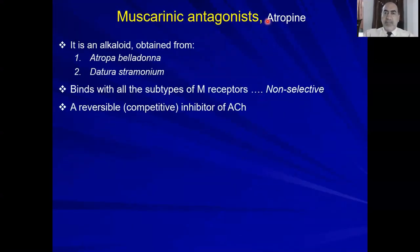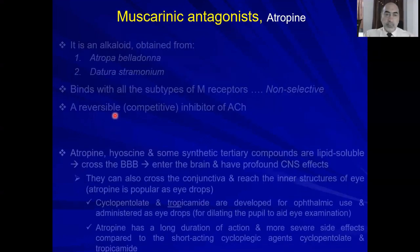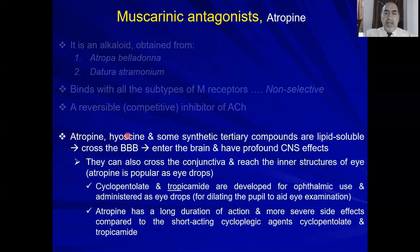Let's start with the prototype — atropine. It's obtained from Atropa belladonna and Datura stramonium. It binds non-selectively with all muscarinic receptors: M1, 2, 3, 4, and 5. It's a reversible inhibitor that competes with acetylcholine for M receptors. Atropine itself is a tertiary amine, as is hyoscine, and other tertiary amines are lipid soluble, allowing them to cross the blood-brain barrier and produce CNS effects.